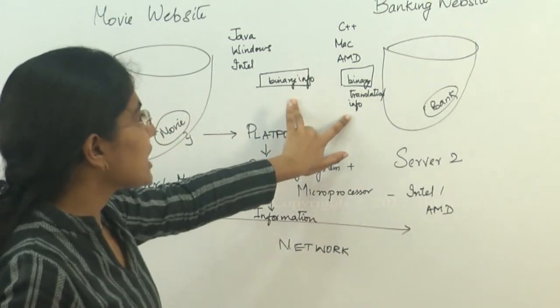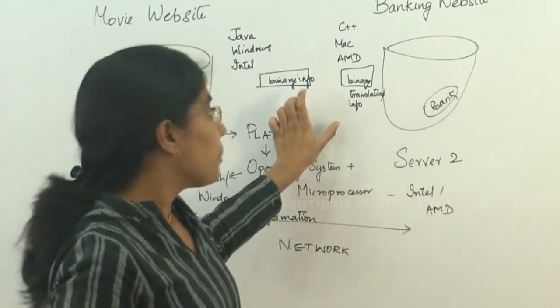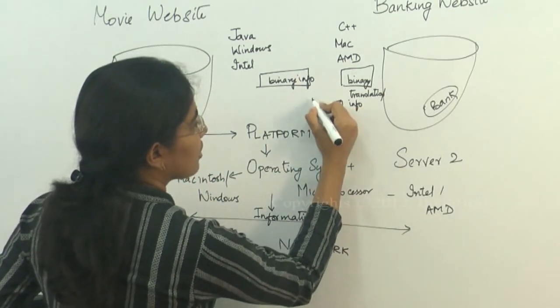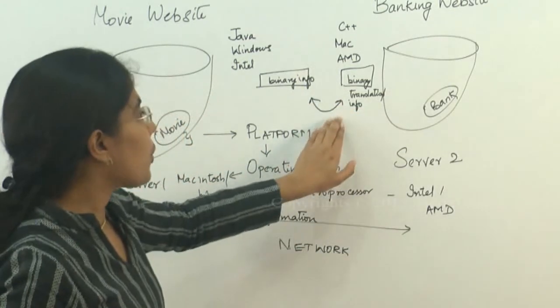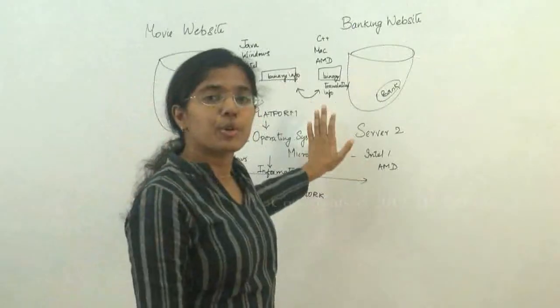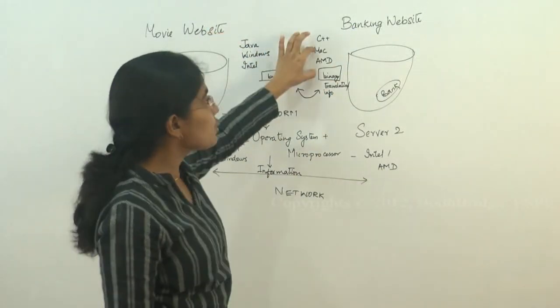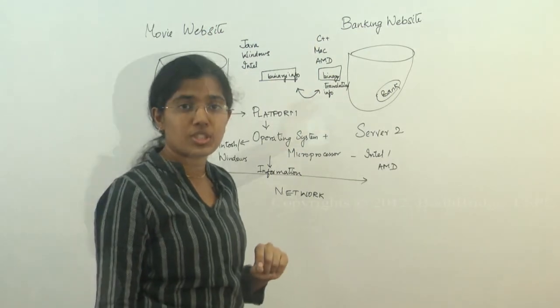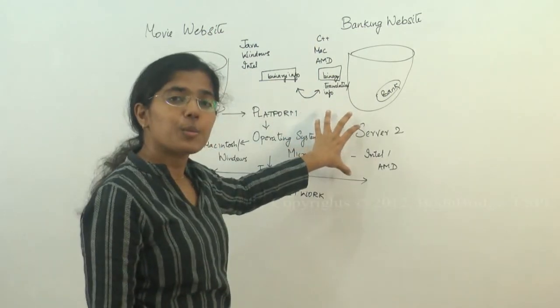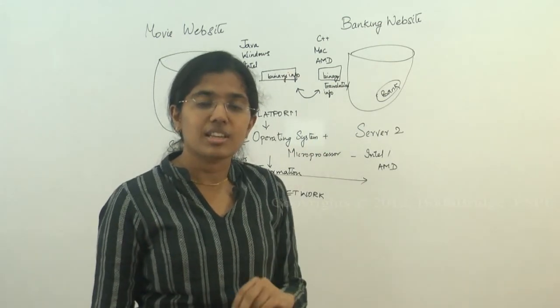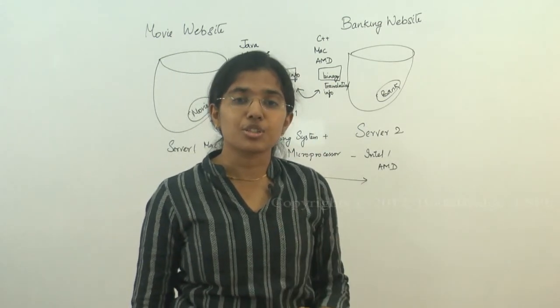So basically these two binaries may not be compatible to talk to each other. This is one challenge presented in programming languages, especially when two different programming languages and two different platforms are used. So that's where we get a new topic called platform independence. That we will see when we go into Java.